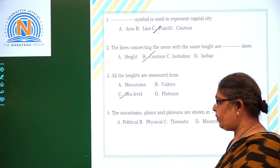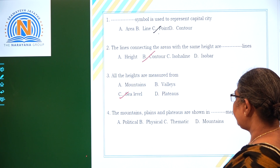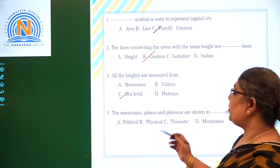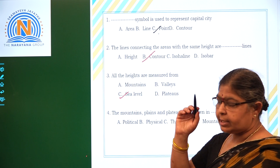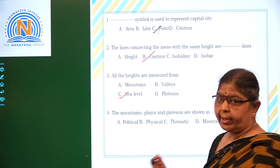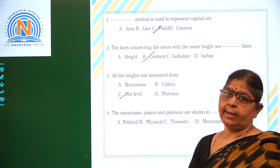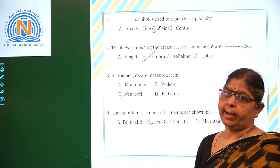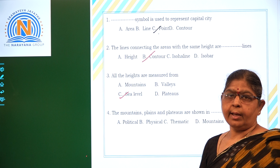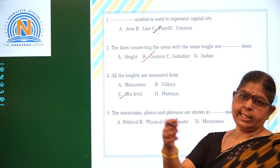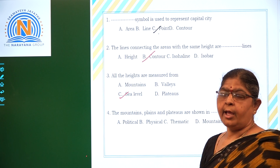Heights are measured from sea level. Mountains, plains, and plateaus are shown in which type of maps? You know there are 3 different kinds of maps: political map, physical map, and thematic map. Political maps show boundaries, states, capitals, and countries.